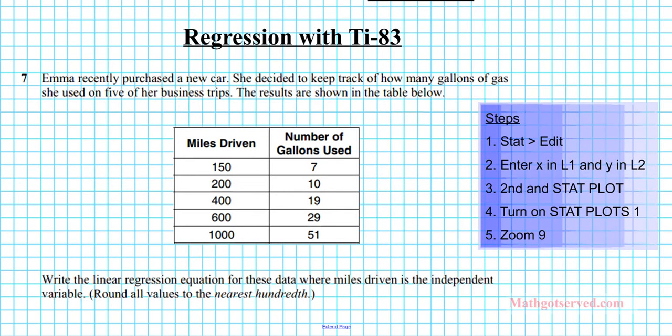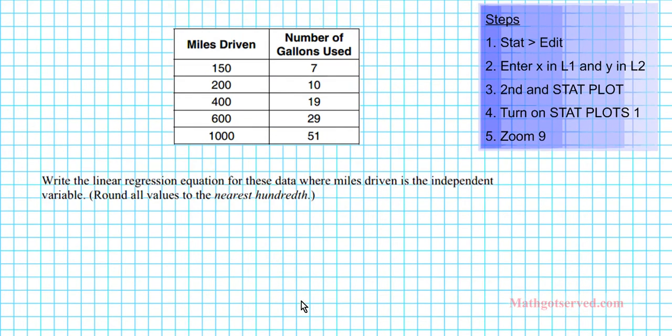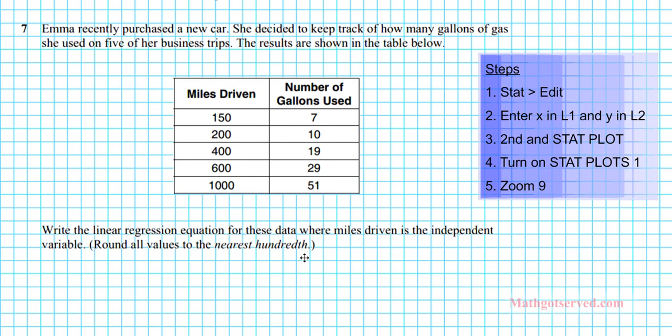In problem 7 it says, Emma recently purchased a new car. She decided to keep track of how many gallons of gas she used on five of her business trips. The results are shown in the table below. So we have this result right here. Write the linear regression equation for these data where miles driven is the independent variable, and we have to round all our values to the nearest hundredths.